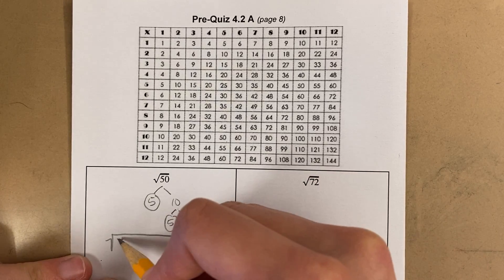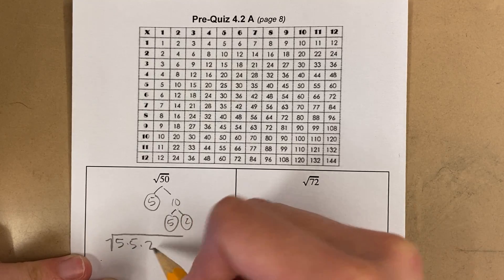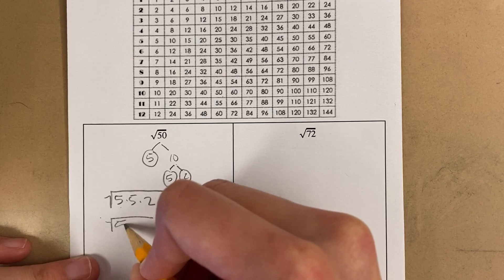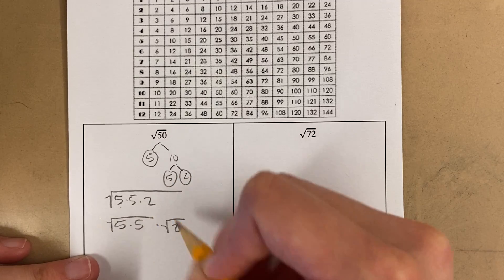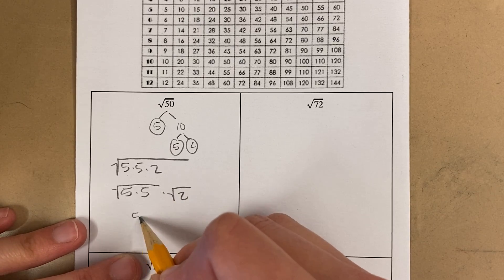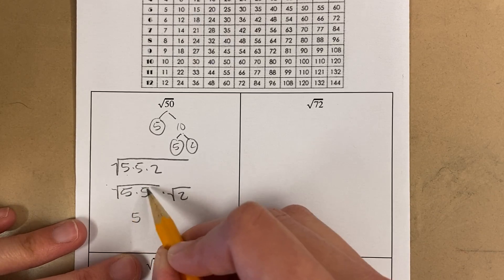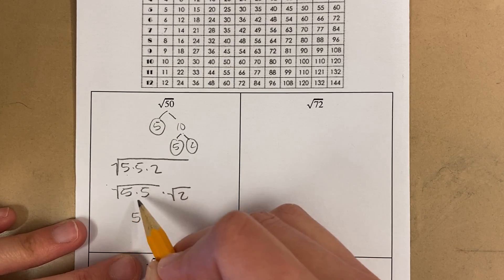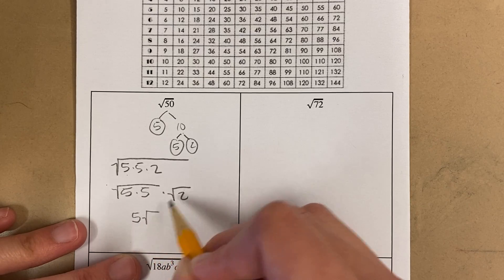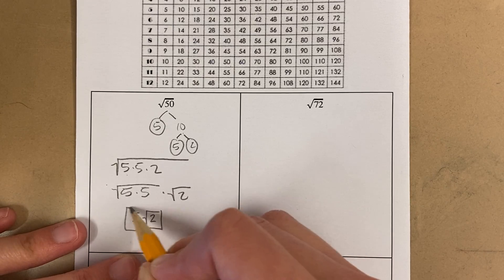So I end up with, I'm going to put my doubles first. 5 times 5 times 2. My doubles go in their own house. And my single stays in its own house. This becomes the number 5. Because this is 5 squared and the square root. If I square a number and square root it, that undoes it. They undo each other and I end up with just the number 5. So this is 5 times the square root of 2.